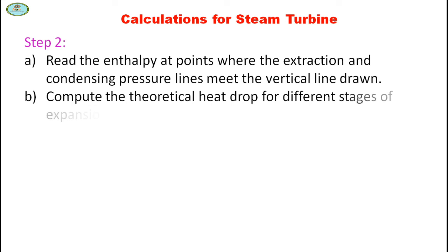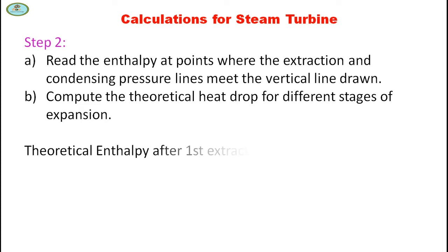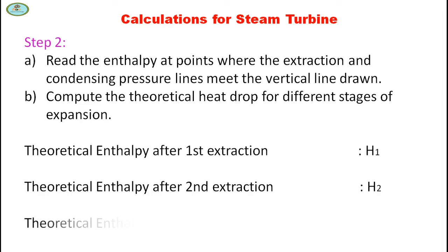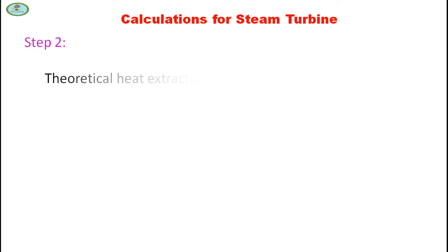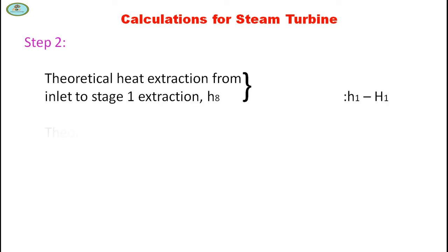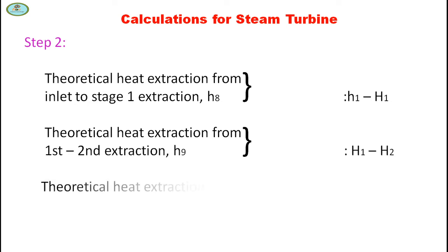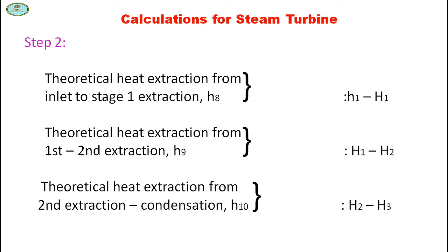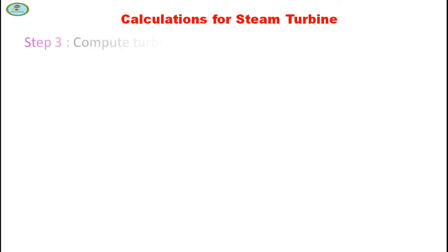Theoretical enthalpy after first extraction is H1 (capital), theoretical enthalpy after second extraction is H2 (capital), and theoretical enthalpy at condenser condition is H3 (capital). Theoretical heat extraction from inlet to first extraction is H1 minus H1(capital), and from first to second extraction is H1(capital) minus H2(capital). In Step 3, compute turbine cylinder efficiency.